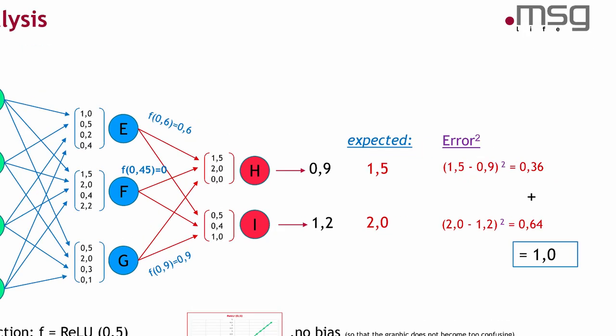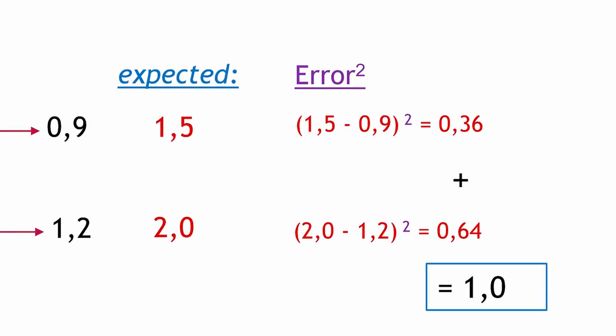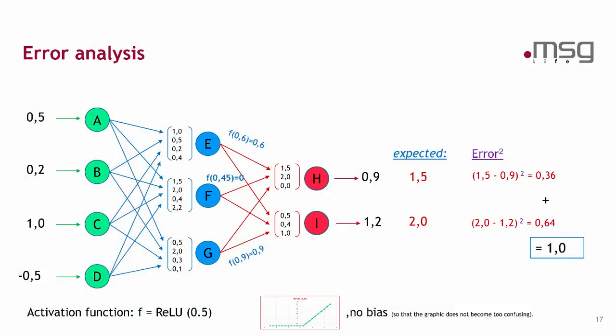Now I choose a so-called error function or cost function. In this example, I take the deviations, square them and sum them up. And if I sum them up, I will get an error of 1.0. I don't know if it's much or not. But by applying the error function, I will get an error. And the aim is now to decrease this error.